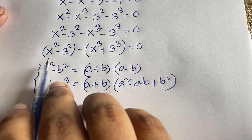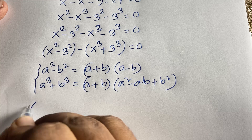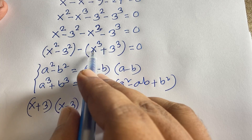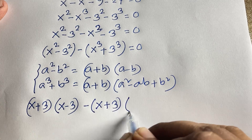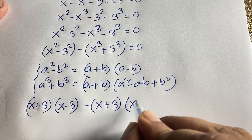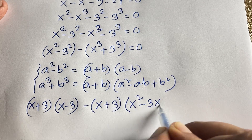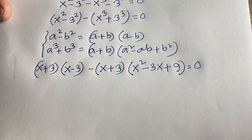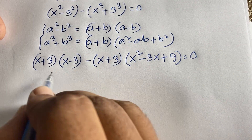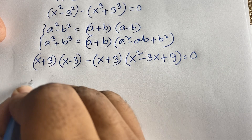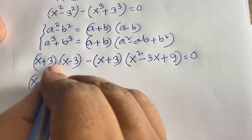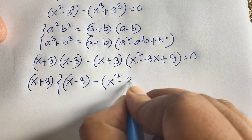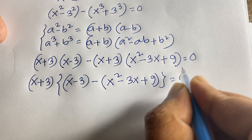According to these formulas, x squared minus 3 squared becomes (x + 3)(x − 3). And x cubed plus 3 cubed becomes (x + 3)(x squared minus 3x plus 9). So the full expression is: (x + 3)(x − 3) minus (x + 3)(x squared minus 3x + 9) is equal to 0.